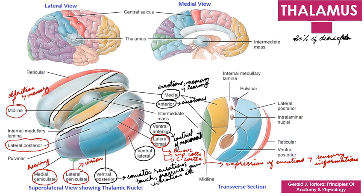The reticular nuclei are very important nuclei; they surround the lateral aspect of the thalamus and monitor and filter the activities of other nuclei of the thalamus.